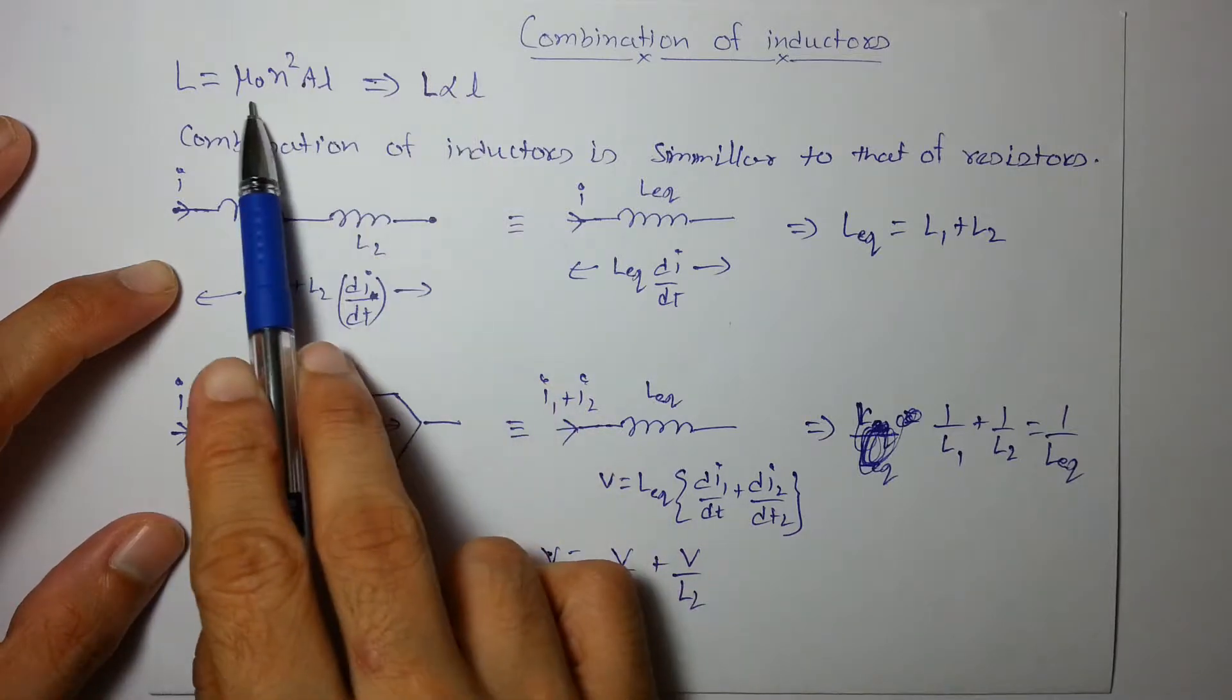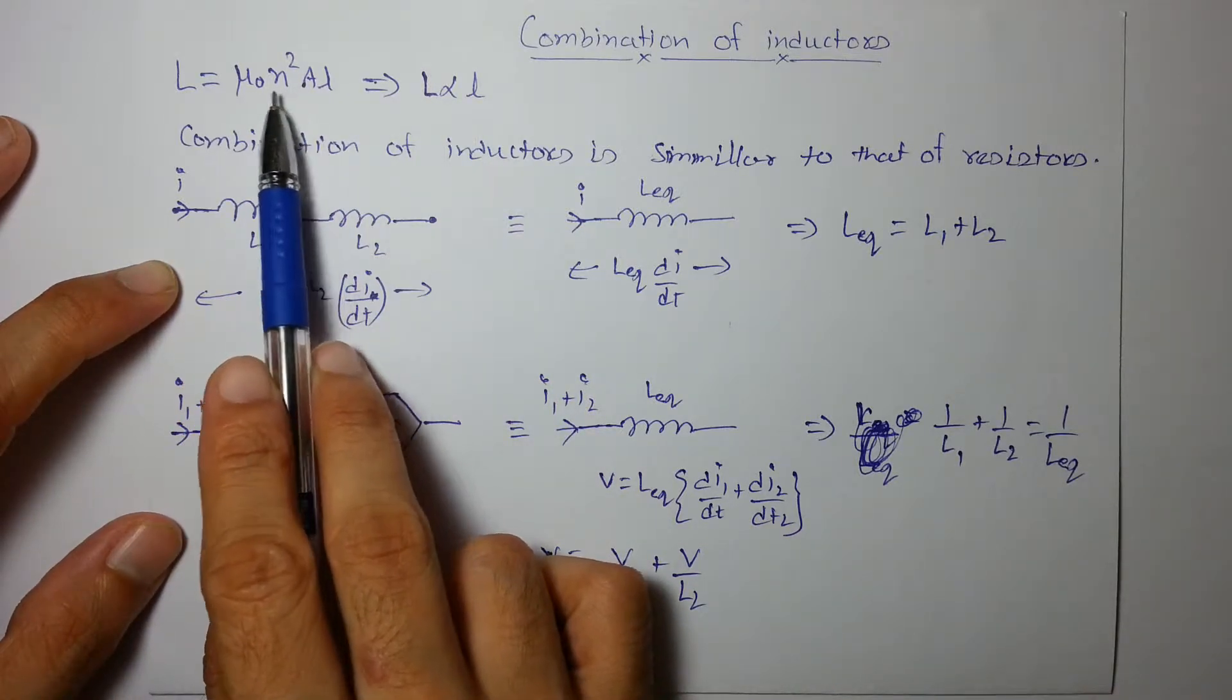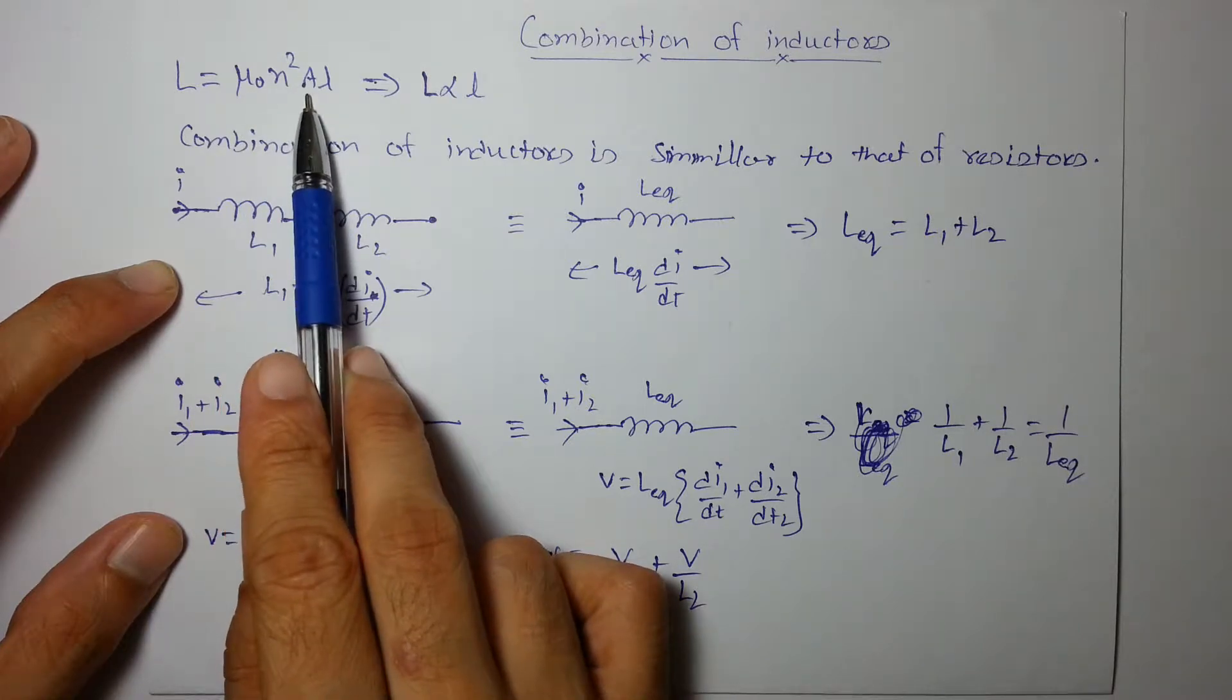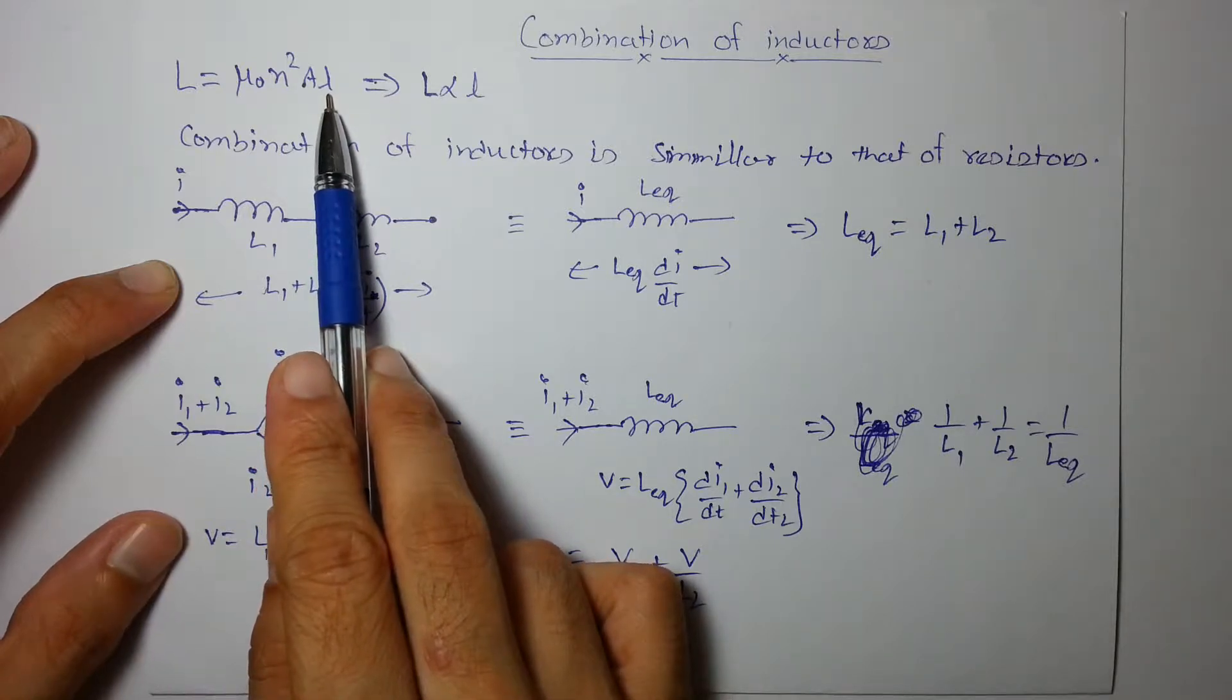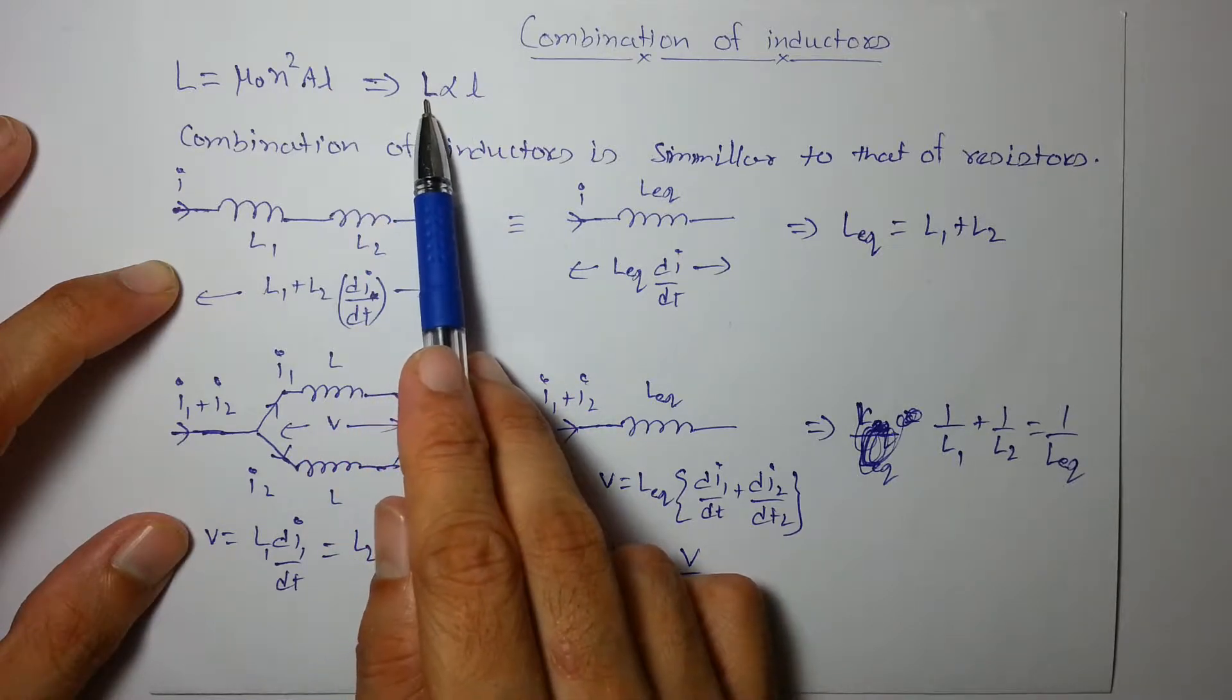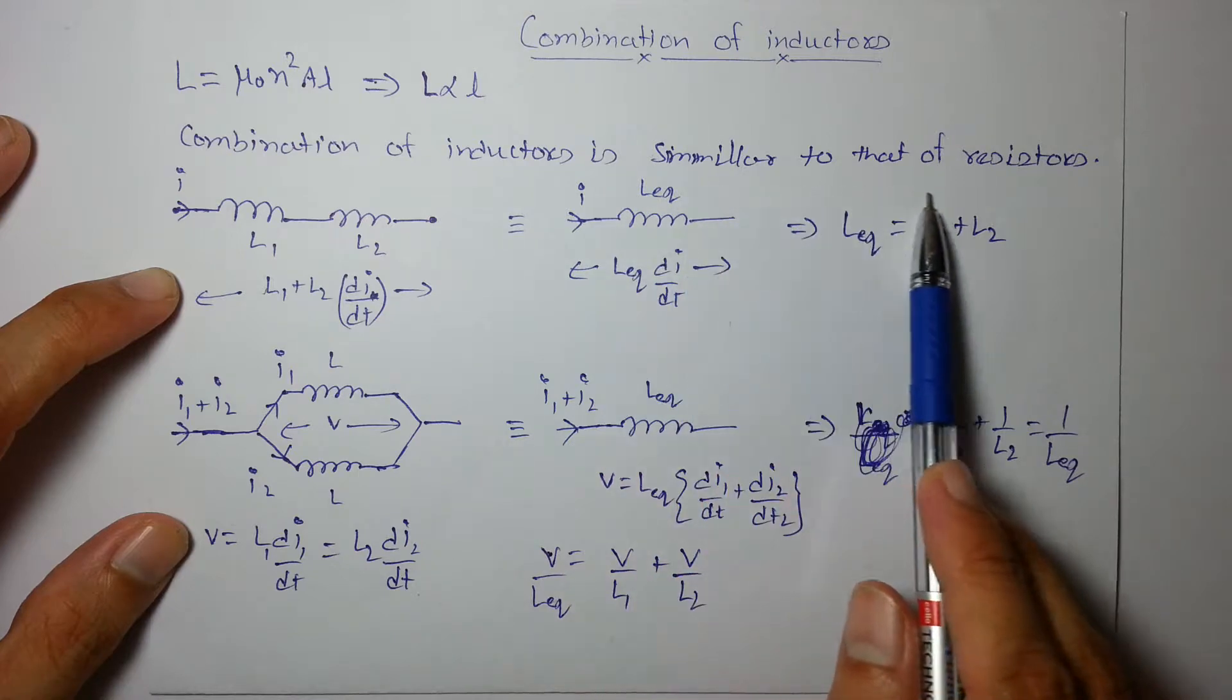Inductance is proportional to L. This is the inductance for a long solenoid: L = μ₀n²AL, where n is the number of turns per unit length, A is area of cross section, and L is the length of the solenoid. So inductance is proportional to the length.